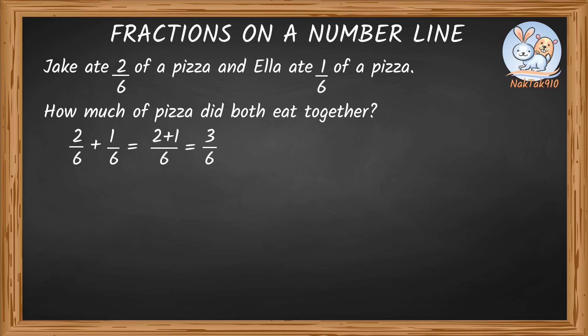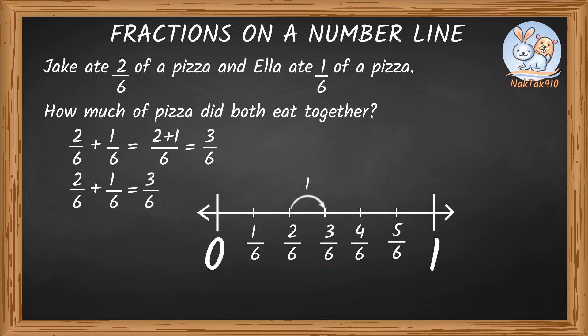Now let's try solving with the number line. One whole is divided into 6 parts, finding 2 sixths on the number line. Now jump once because the top number is 1 sixth. We end up at 3 sixths. 2 by 6 plus 1 by 6 equals 3 by 6. There you go. Answer is 3 sixths either way. Jake and Ella ate 3 by 6 of the pizza together. Perfect.